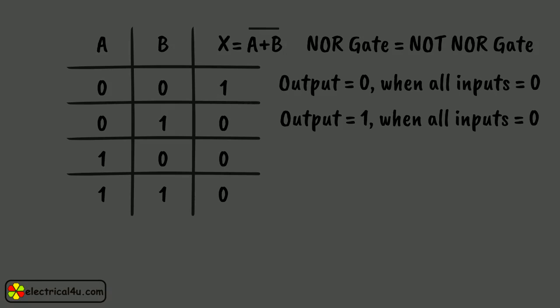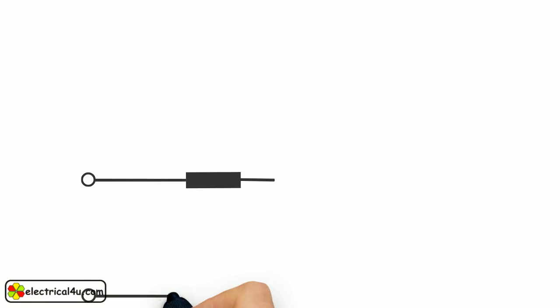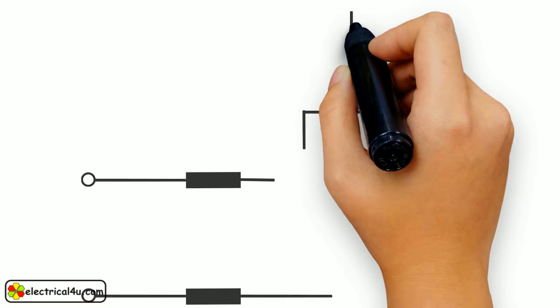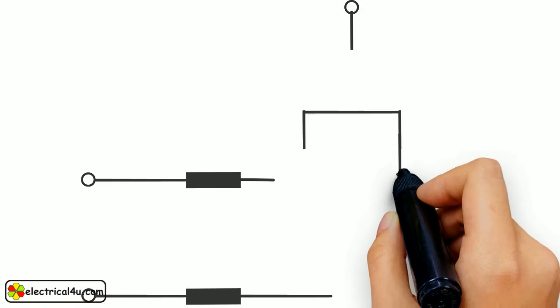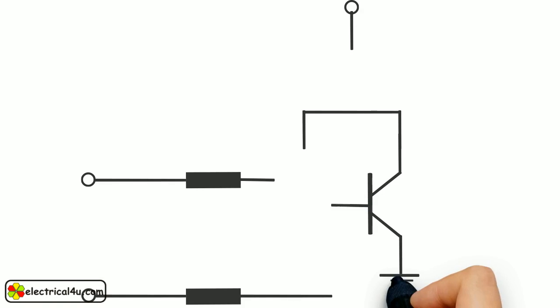Now we will discuss about resistor transistor logical gate. A NOR gate can be realized by using two bipolar junction transistors. The basic circuit is as shown. This circuit is made by two parallel connector transistors.